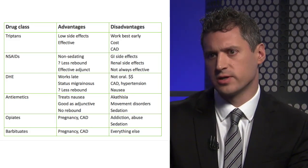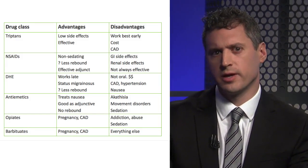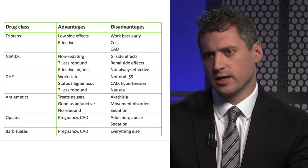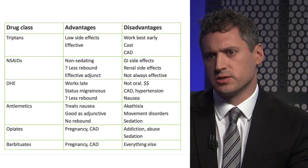DHE, or dihydroergotamine, is an alternative to triptans for people that have daily headache or status migrainosus where they have migraines lasting for days. It may have less risk of medication overuse than triptans. The main issue is the available formulations — it's an IM injection — and it's contraindicated in coronary artery disease or uncontrolled hypertension. Some formulations can be very expensive or may not be covered by insurance.